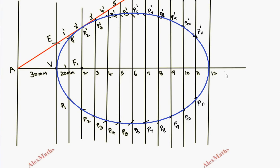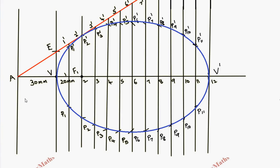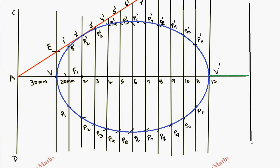After completing the ellipse, name the other end vertex as V dash. We already have vertex V on one side. The first directrix is named CD. Measure the distance from vertex V to directrix CD, then mark the same distance from vertex V dash on the other side to locate the second directrix, named C dash D dash. Now we have both vertices and both directrices.